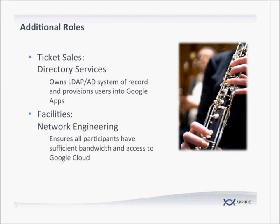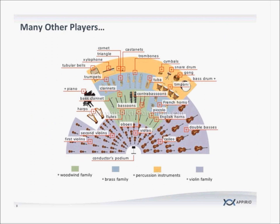Other key roles include directory services — whoever owns the system of record for user management — because we typically use Google Apps Directory Sync so you're only doing user management in one place, provisioning users and related attributes over into Google Apps. Network engineering is also essential, making sure all participants have sufficient bandwidth and access to the Google Cloud. Often in the EDU space you have very tight firewalls to make sure different segments of your population can't get to inappropriate content, so there's often a focus on making sure the correct holes are punched through so users can effectively access all portions of Google Apps.